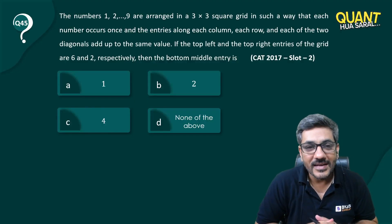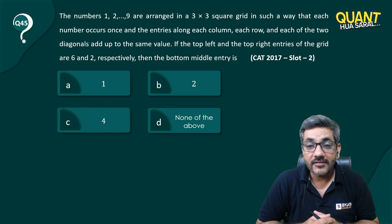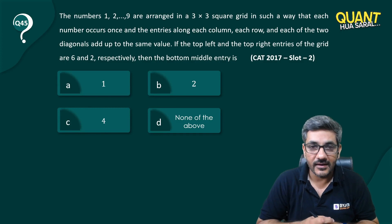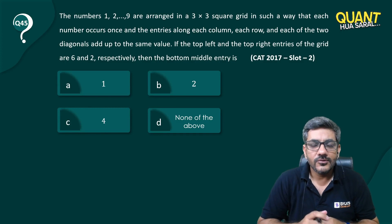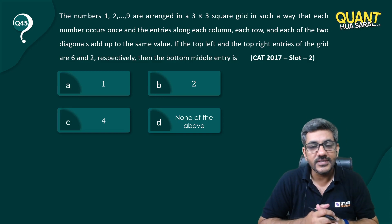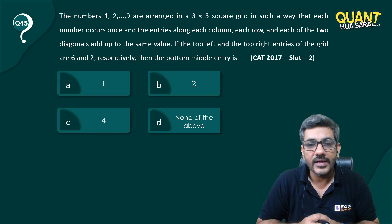Hi everyone, welcome back to Quant Quant Saral series. Today we have question number 45 and with this question we are starting with CAT 2017 now. So we have already covered 2022, 21, 20, 19 and 18. So 5 years questions. This is the sixth year that is 2017 that we are discussing now.